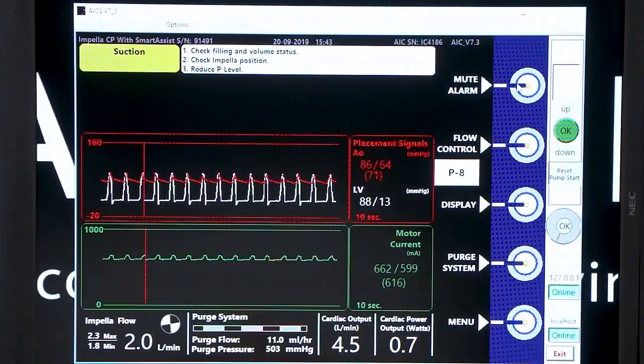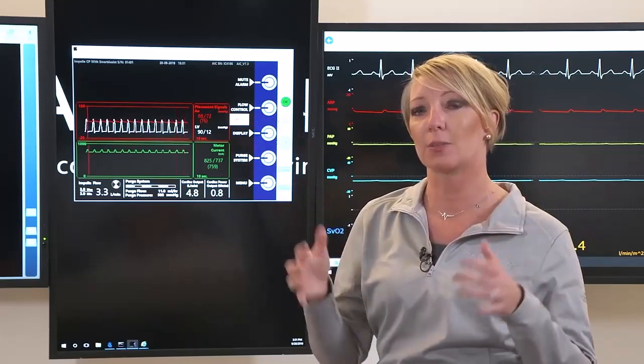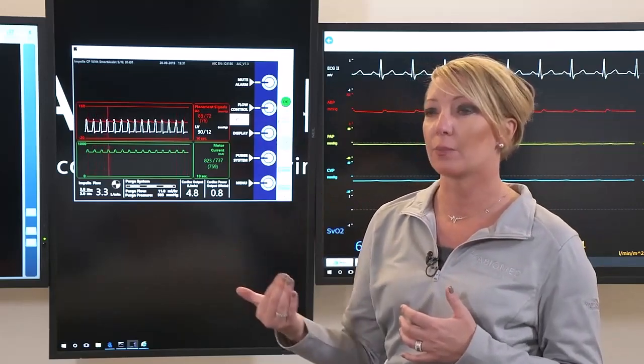Your yellow alarm is going to mean that the pump is functioning, just not adequately supporting the patient. So this is going to be more like a suction alarm. You're still getting flow, it's just not at that ideal spot that you would have at that given P level.